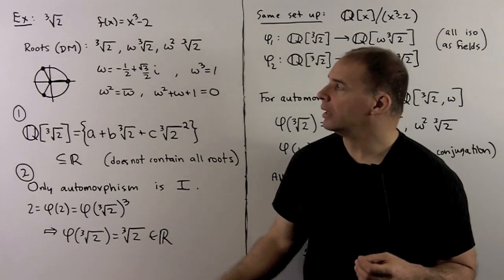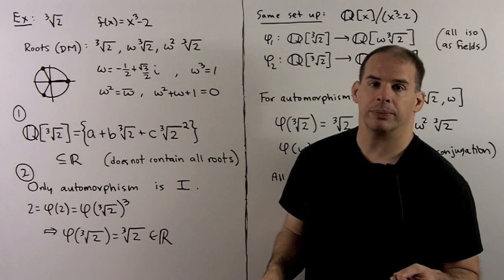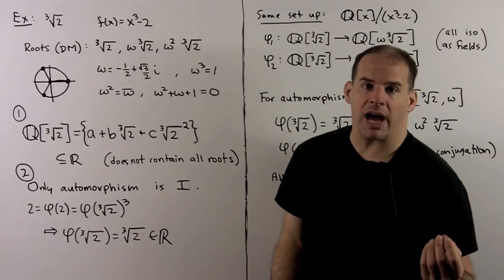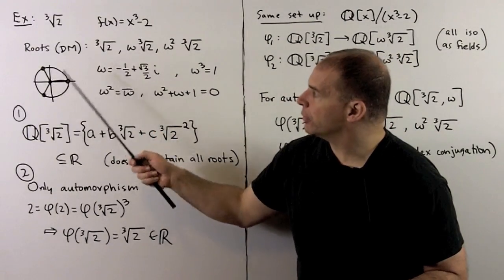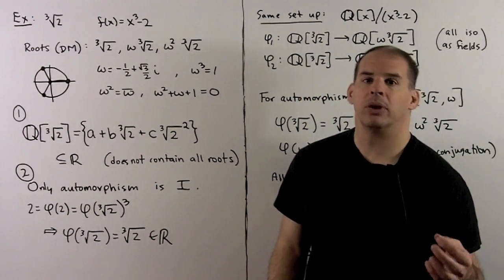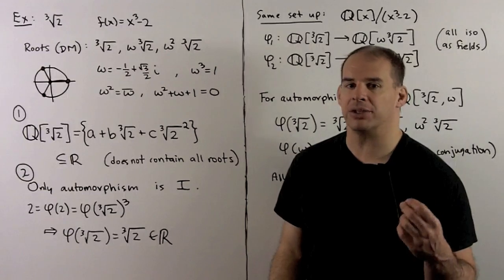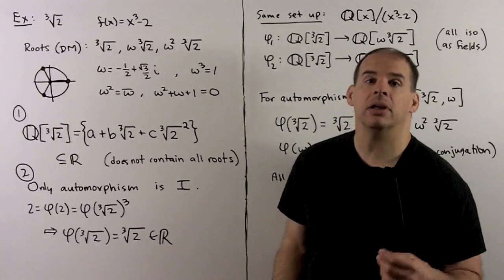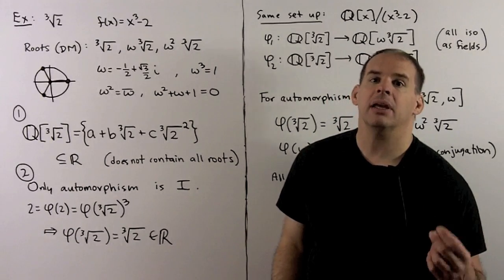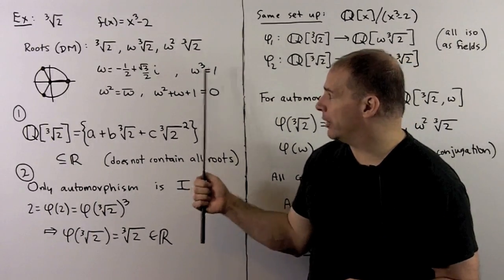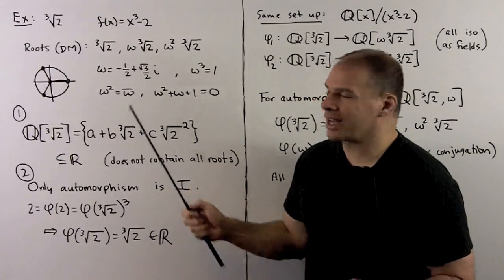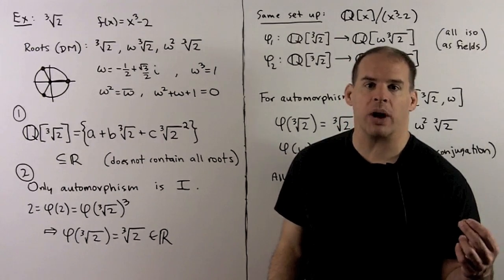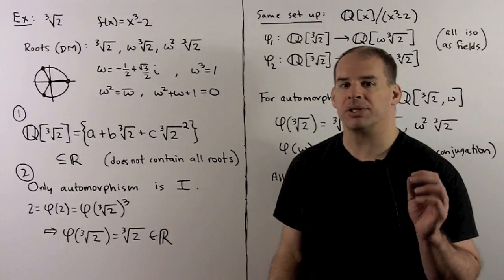For a different example, consider the cube root of 2 in the reals — a root of x³ − 2, which is irreducible over the rationals. Using De Moivre's theorem, this polynomial has roots ∛2, ω∛2, and ω²∛2, where ω is the cube root of unity: ω = −1/2 + (√3/2)i. This satisfies ω³ = 1, ω² = complex conjugate of ω, and ω and ω² are roots of x² + x + 1.